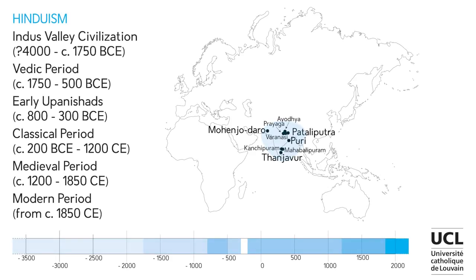Domain 9a: Hinduism. In India, the vast majority of the population practices Hinduism, with large Muslim, Christian, Jain and other communities. Hinduism also prevails in Nepal and is present in many other countries with communities of Indian origin. Islam is the majority religion in present-day Pakistan, Bangladesh and the Maldives. For the history of Hinduism, the important periods include the Indus Valley civilization, the Vedic period, the early Upanishads, the classical period, the medieval period and the modern period. The important sites include Mohenjo-Daro, Pataliputra, Puri and Tanjavur.